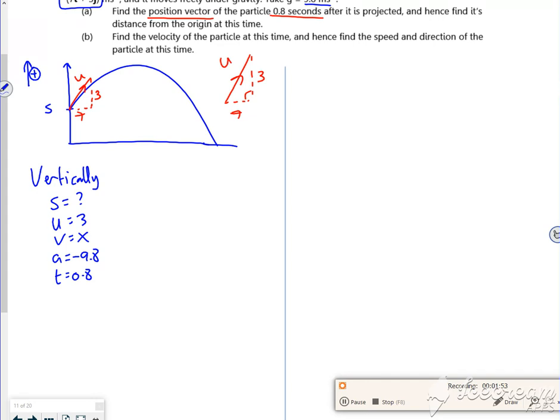So choosing an equation without v is s equals ut plus a half a t squared. So s is 3 lots of 0.8 plus a half times minus 9.8 times 0.8 squared.